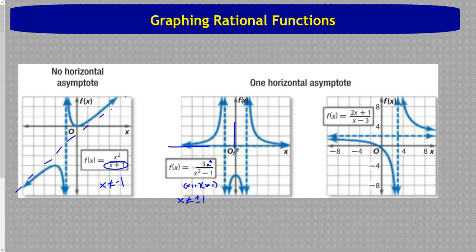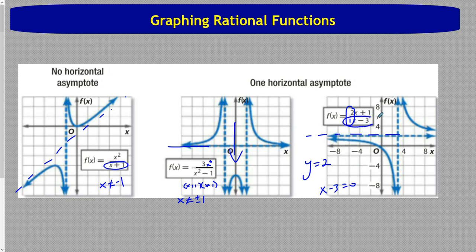Example two: we have x to the 0 power on top and x squared on the bottom, so the bottom degree is bigger, giving a horizontal asymptote at 0. The bottom equals 0 when factored as x plus 1 and x minus 1, so x cannot equal plus or minus 1. We have vertical asymptotes at negative 1 and positive 1. Example three: the degrees are the same, so the horizontal asymptote is y equals 2 divided by 1, which is y equals 2. The vertical asymptote is at x equals 3, where x minus 3 equals 0.